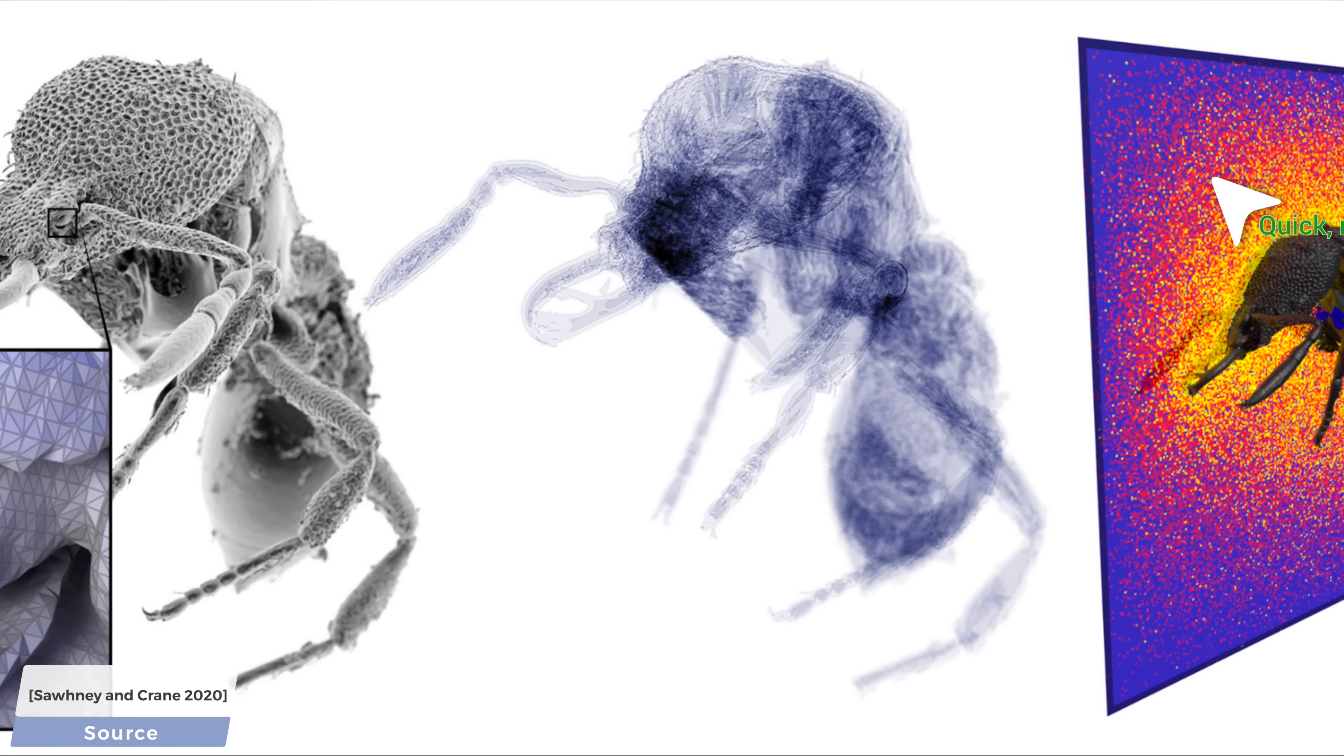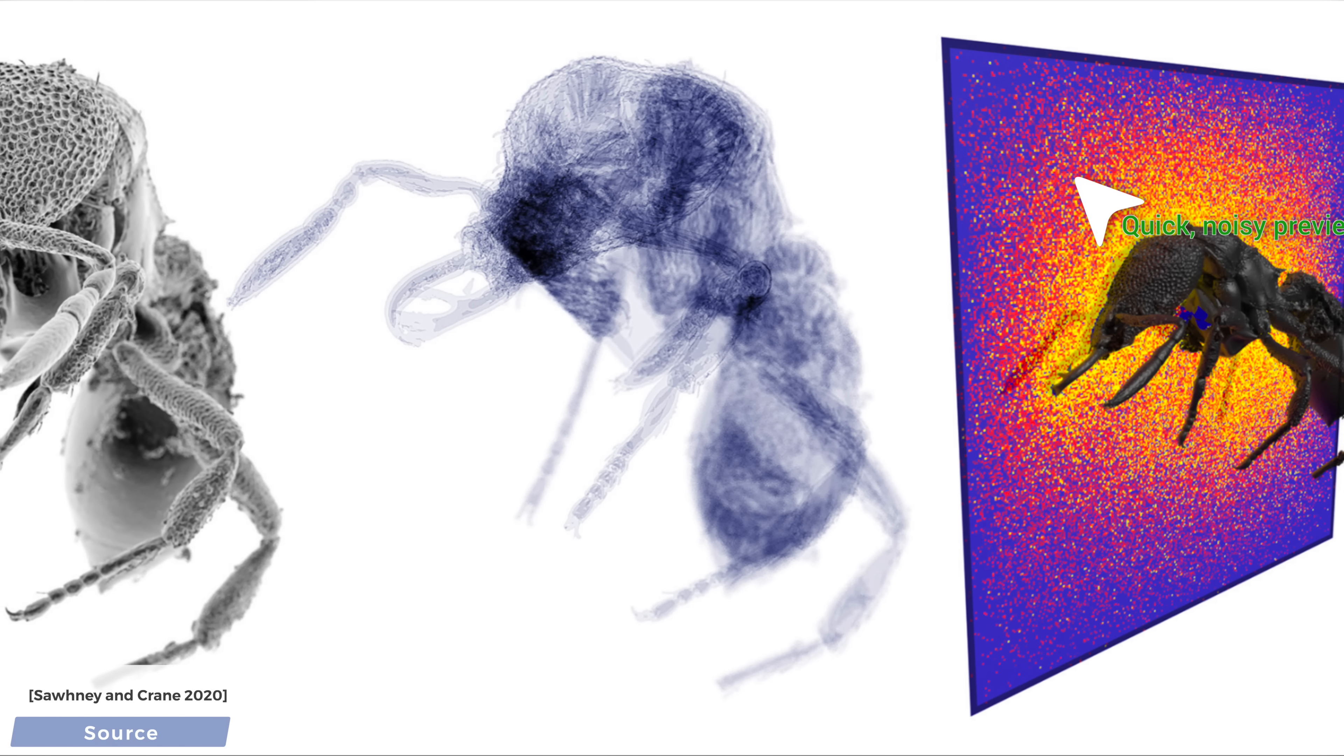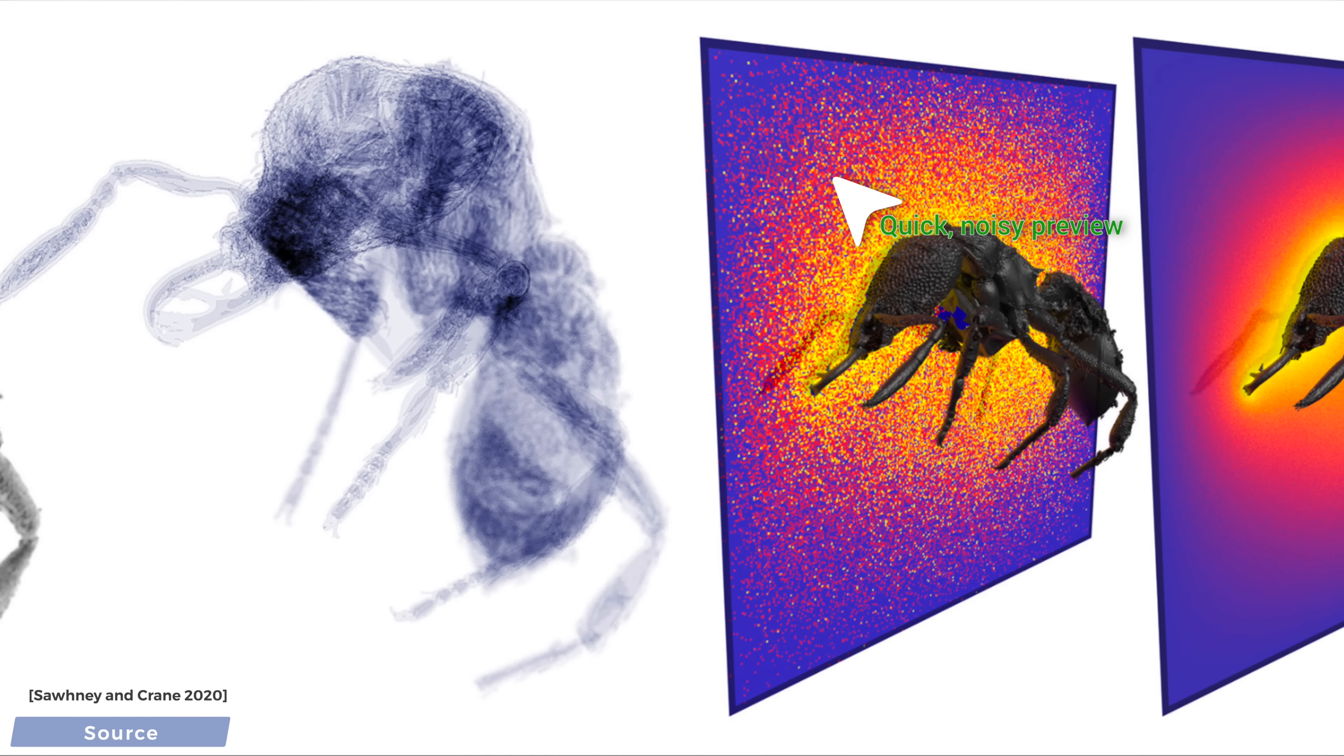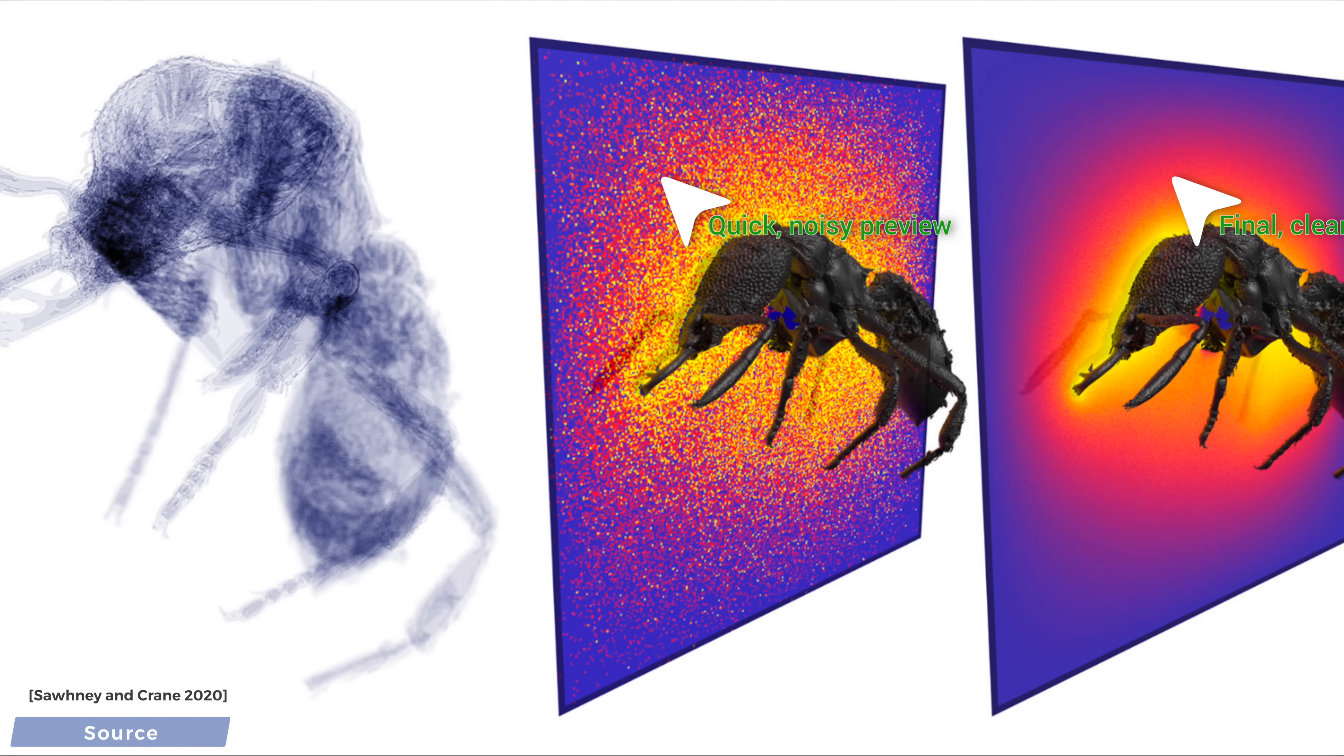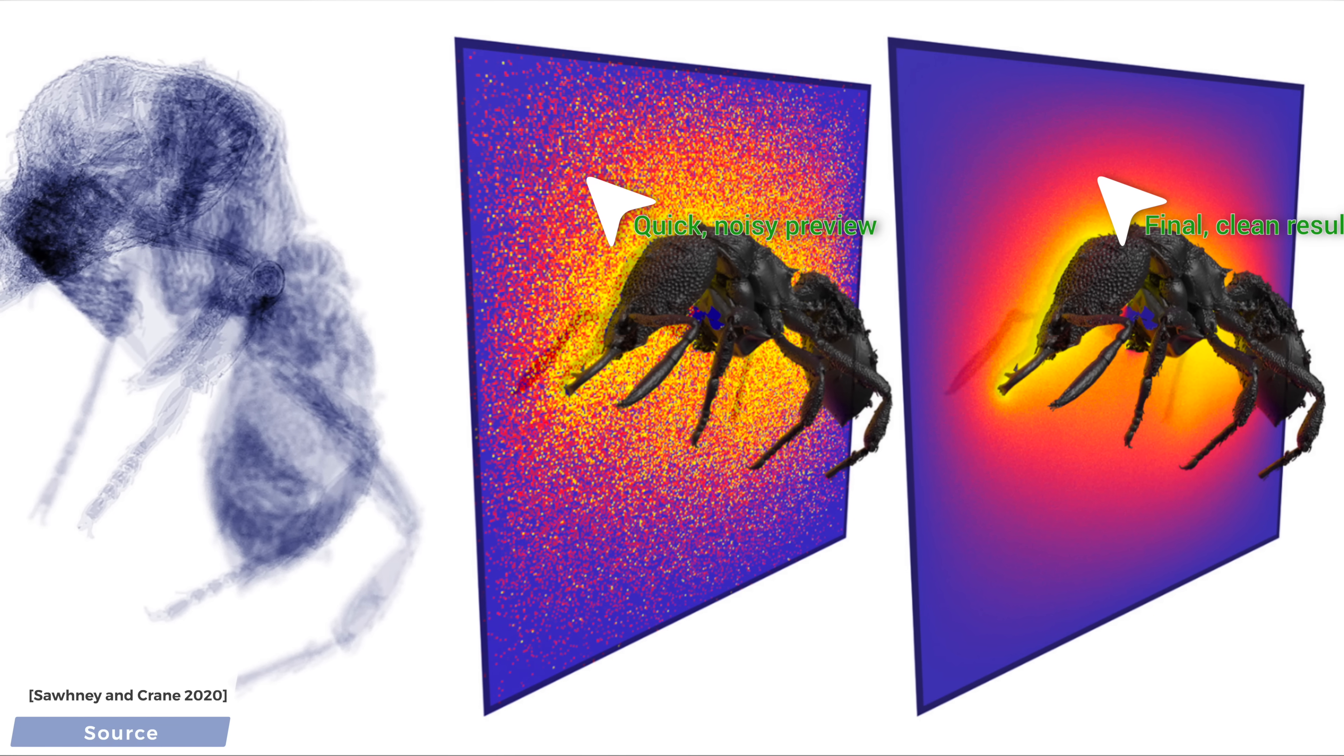With traditional techniques, this would normally take more than 14 hours and 30 gigabytes of memory, but if we apply Monte Carlo integration to this problem, we can get a somewhat noisy preview of the result in less than one minute. Of course, over time, as we compute more samples, the noise clears up, and we get this beautiful final result.